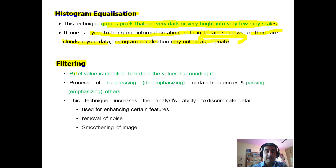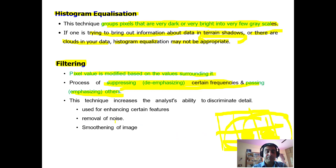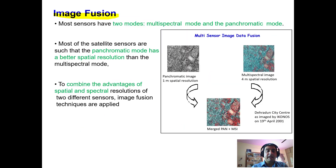Another image enhancement technique is filtering. A pixel value is modified based on the values surrounding it — you modify the value of a middle pixel based on its surrounding pixels. This means suppressing or de-emphasizing certain frequencies while passing others. Each pixel's value is changed based on the average value of the pixels surrounding it after a filter is applied. Filtering is used for enhancing certain features, removal of noise, and smoothening of the image.